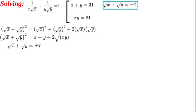Now we're going to go one step further and cube both sides. So we have the quantity (√x plus √y) to the power of 3 is equal to 7 to the power of 3, and we know that is 343.